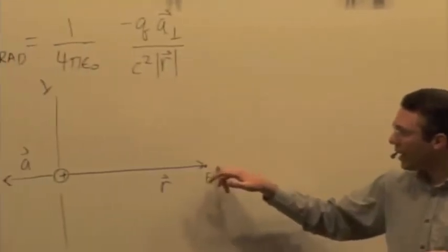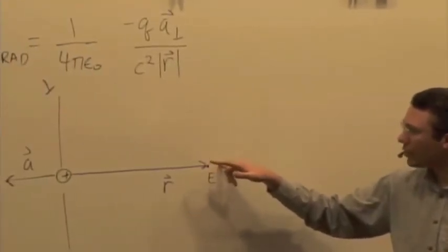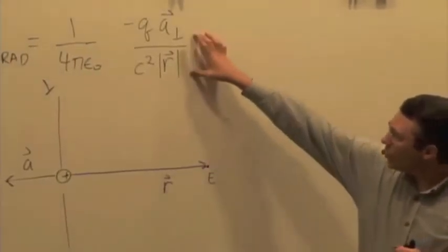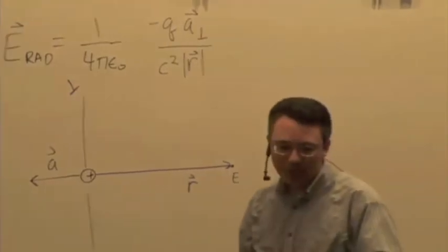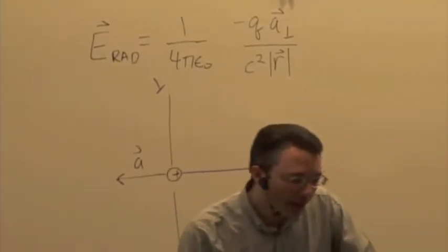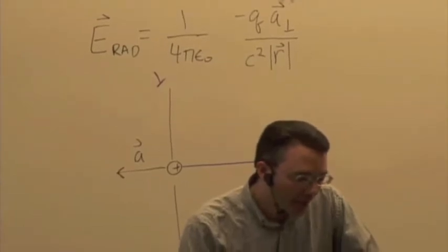You'll still have the Coulomb field, you'll still have the 1 over 4 pi epsilon 0 q over r squared field due to the presence of the charge, but you won't see this radiative component we talked about, that kink in the field line last time in the demonstration that we showed.